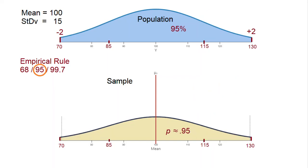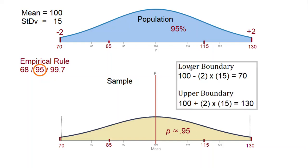According to the empirical rule, approximately 95% of the population is within two standard deviations. Our lower boundary is 100 minus two standard deviations, taking us down to 70, and our upper boundary is 100 plus two standard deviations, taking us up to 130. The probability of randomly selecting a value from the population between 70 and 130 is approximately 0.95.